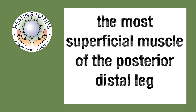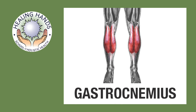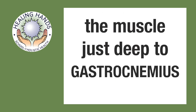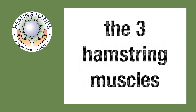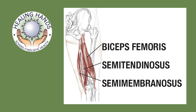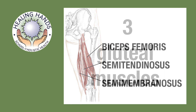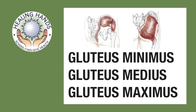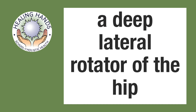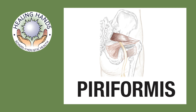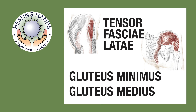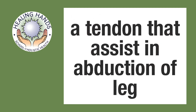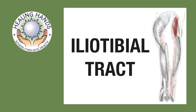The most superficial muscle of the posterior distal leg is gastrocnemius. The muscle just deep to gastrocnemius is soleus. The three hamstring muscles are biceps femoris, semitendinosus, and semimembranosus. The three gluteal muscles are gluteus minimus, gluteus medius, and gluteus maximus. The deep lateral rotator of the hip is piriformis. The three muscles that abduct the leg are gluteus minimus, gluteus medius, and tensor fascia latae. The tendon that assists in abduction of the leg is the iliotibial tract.